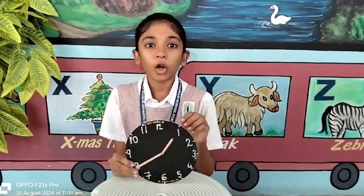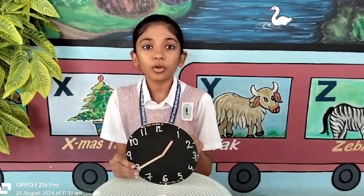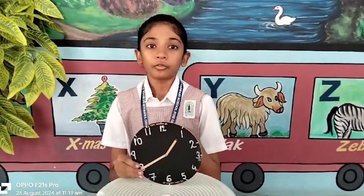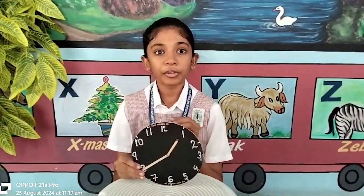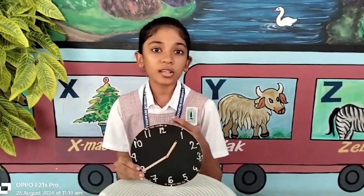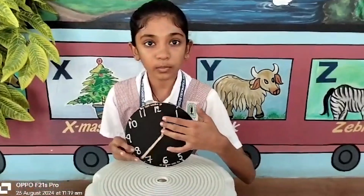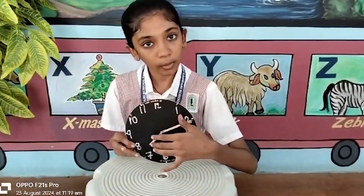Circular motion: when an object or thing moves in a circular path around a fixed point, it is called circular motion. For example, a clock is moving in a circular path.